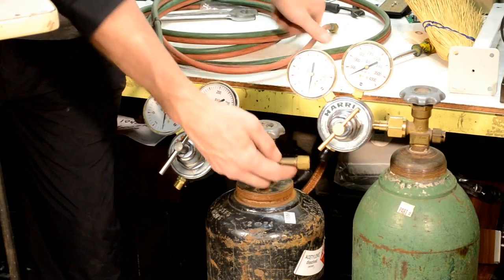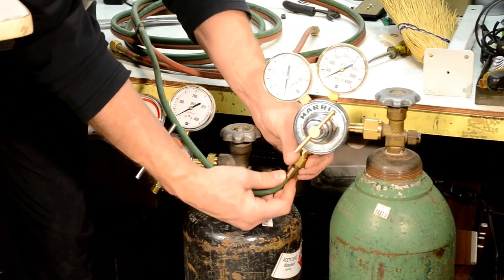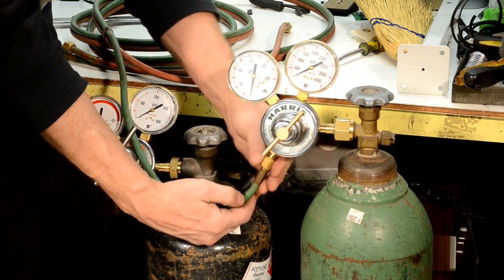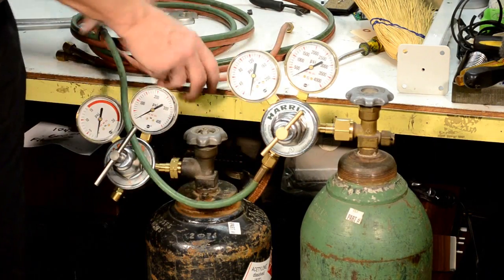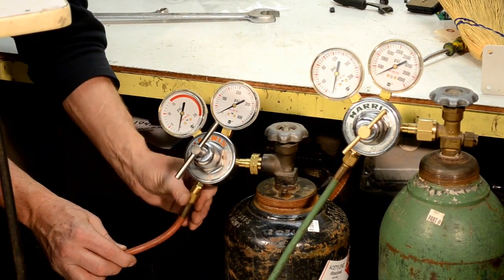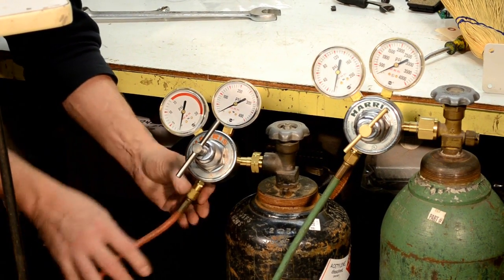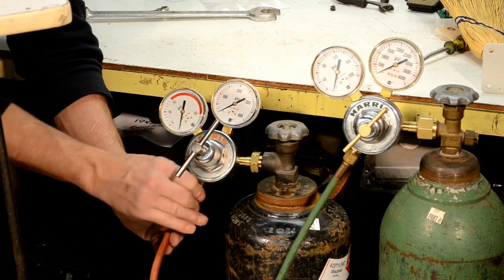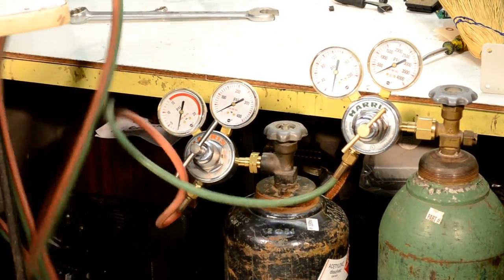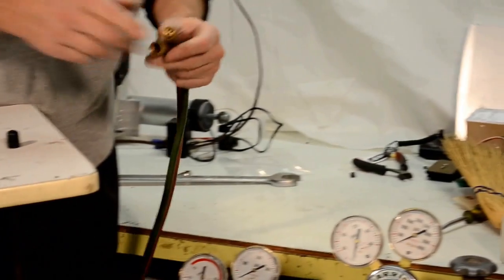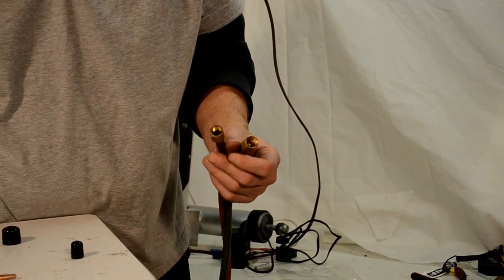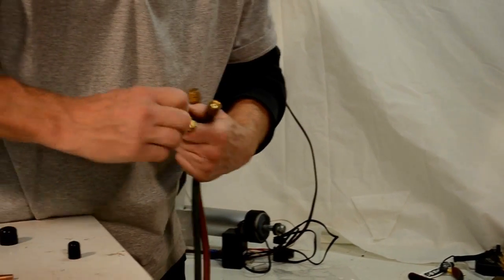We're going to put the hoses on now onto our regulators. And again, they turn in opposite directions. Then bring our hose back up. And we're going to be doing brazing rather than cutting, so we're going to put the brazing tip on.